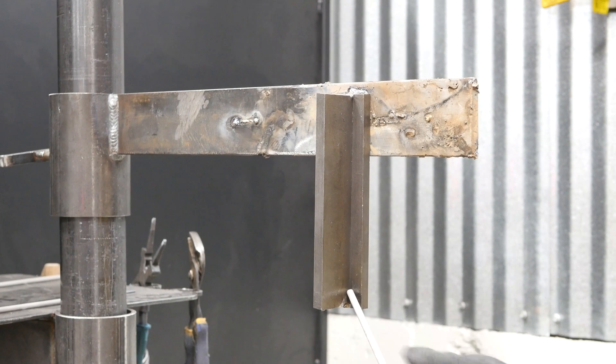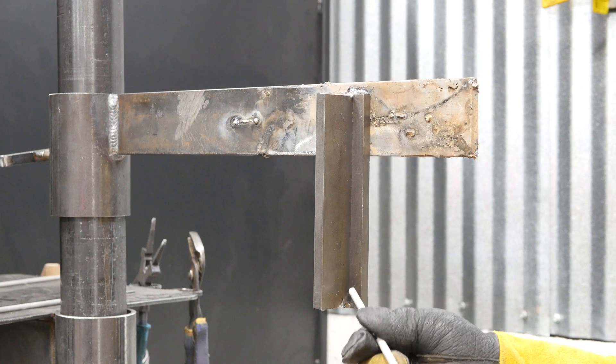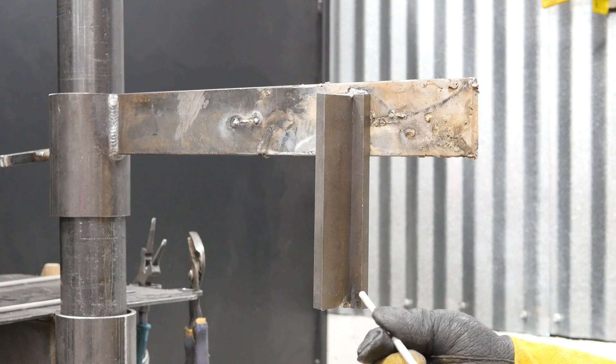When I use a 7018 eighth-inch electrode like I have here and I'm going vertical up, my amperage range should be somewhere between 100 and 120 amps.